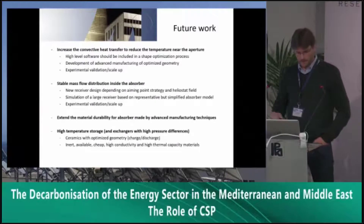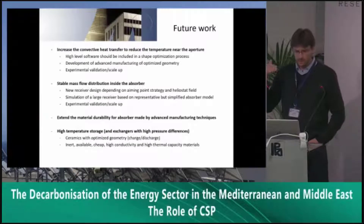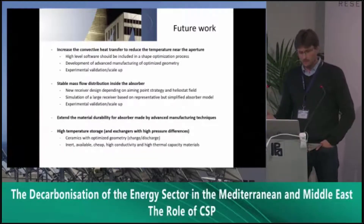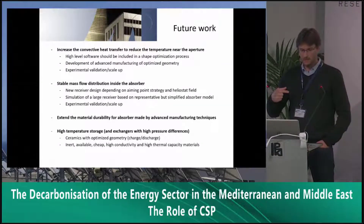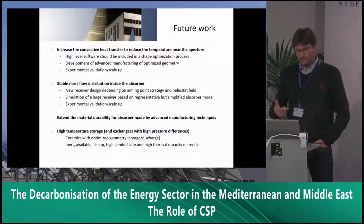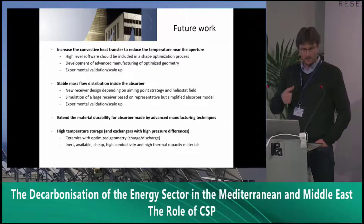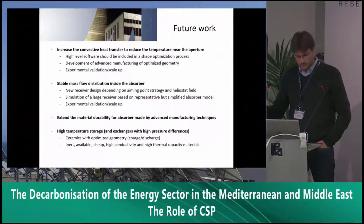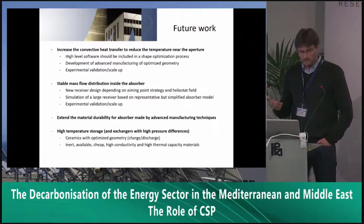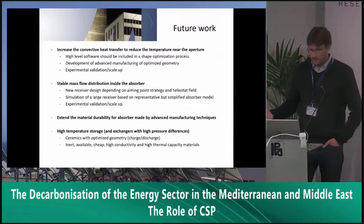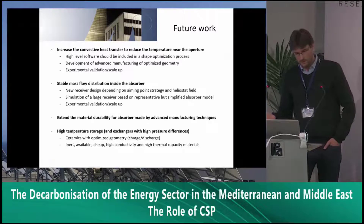To increase convective heat transfer and reduce the temperature near the aperture, we will need high-level software implemented in shape optimization procedures. Once we have an optimized geometry, we will be able to propose the geometry and then develop the corresponding advanced manufacturing processes to create it. After that, we proceed to experimental validation and scale-up.